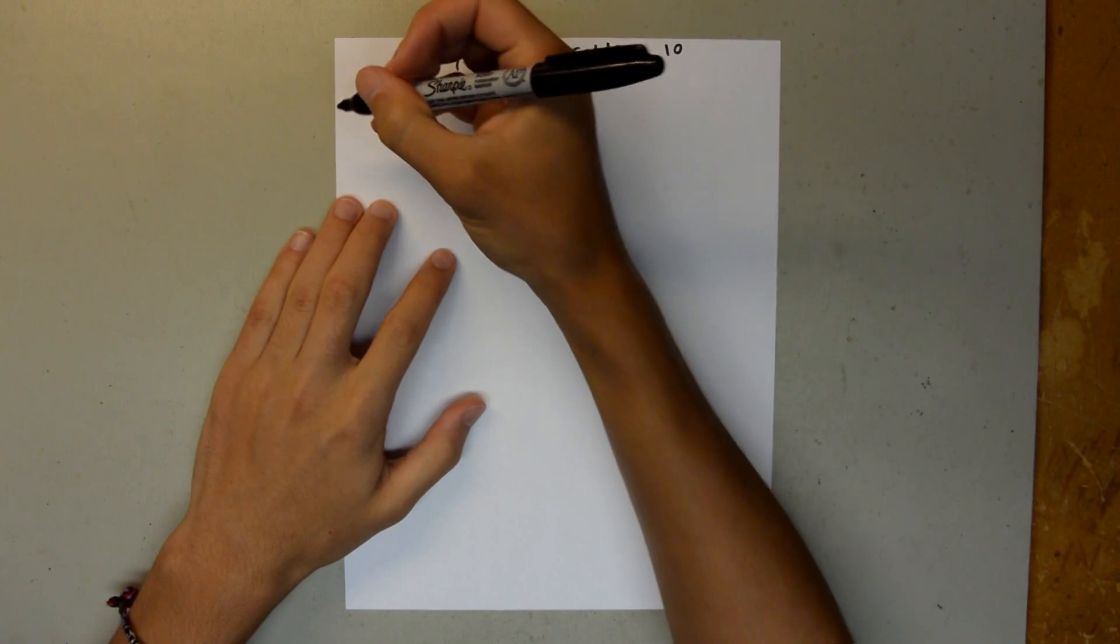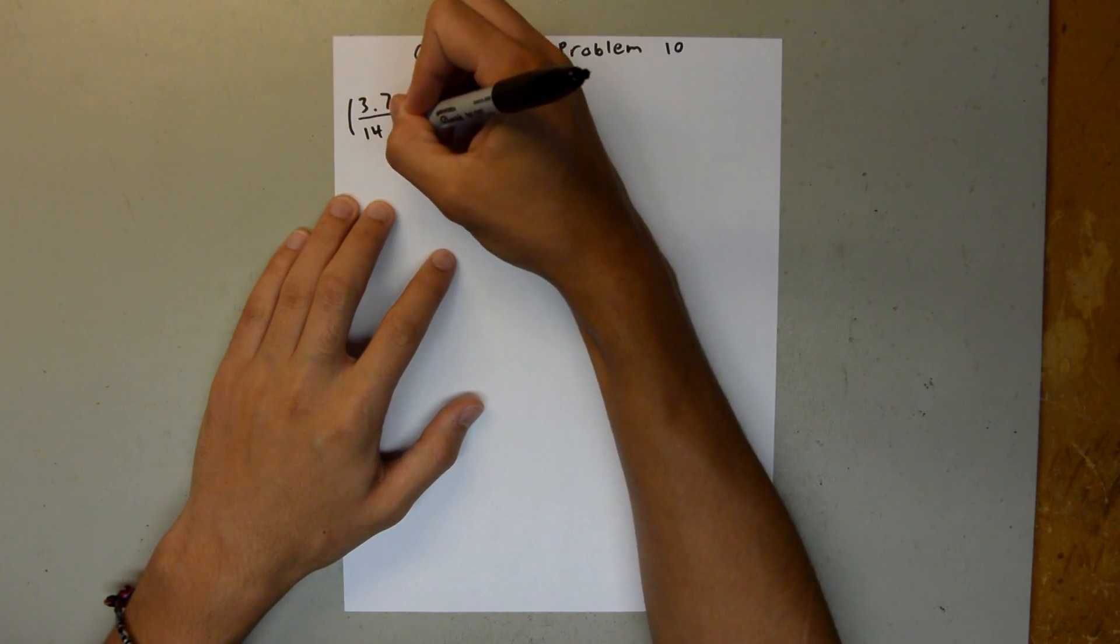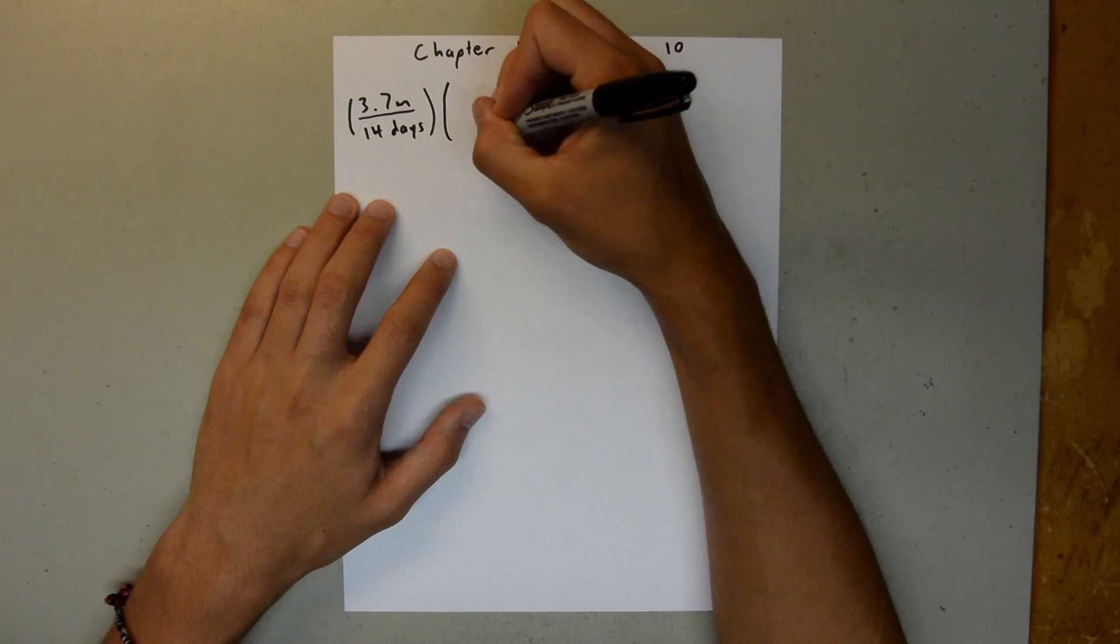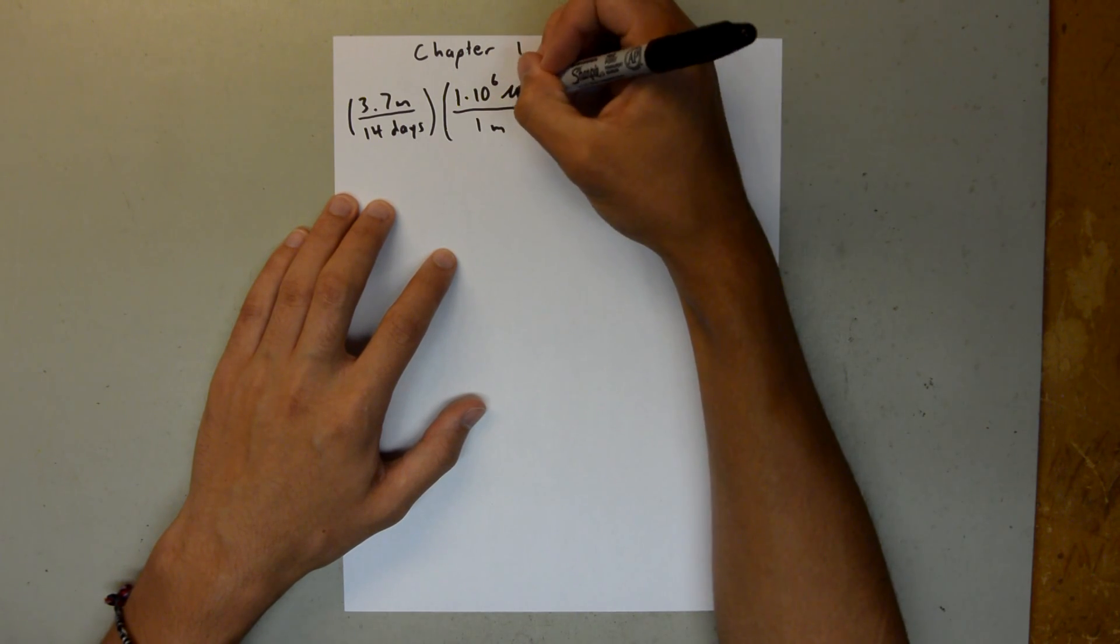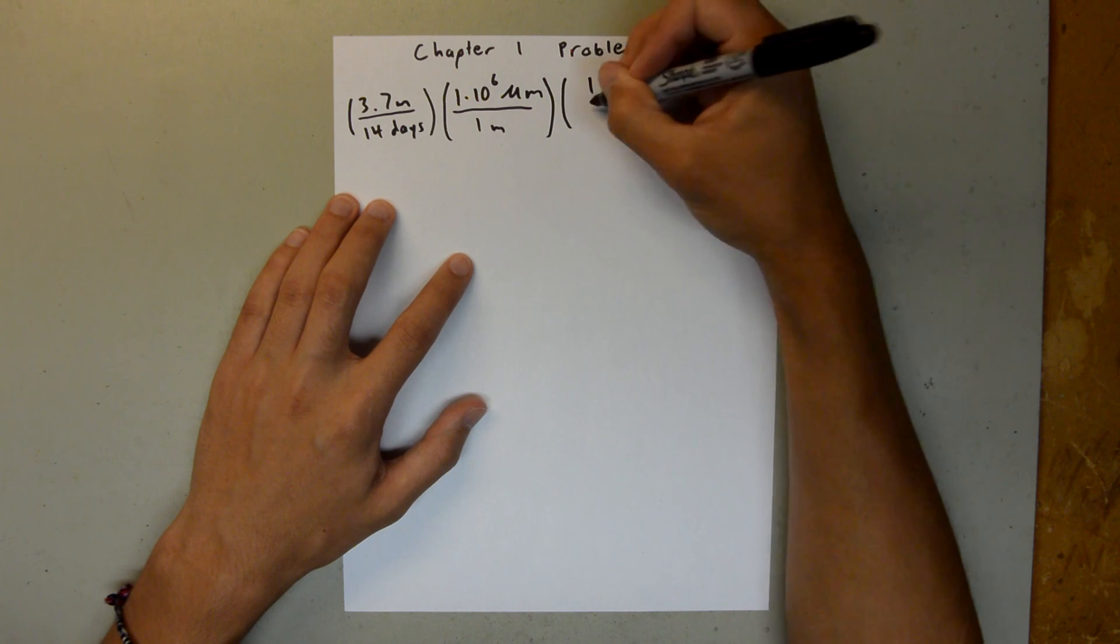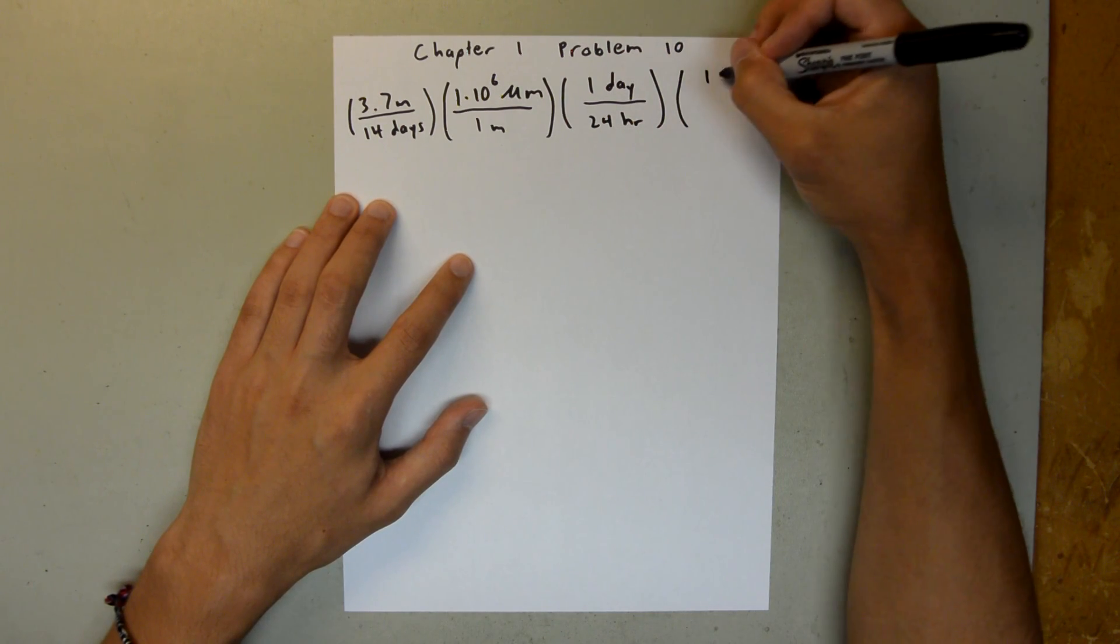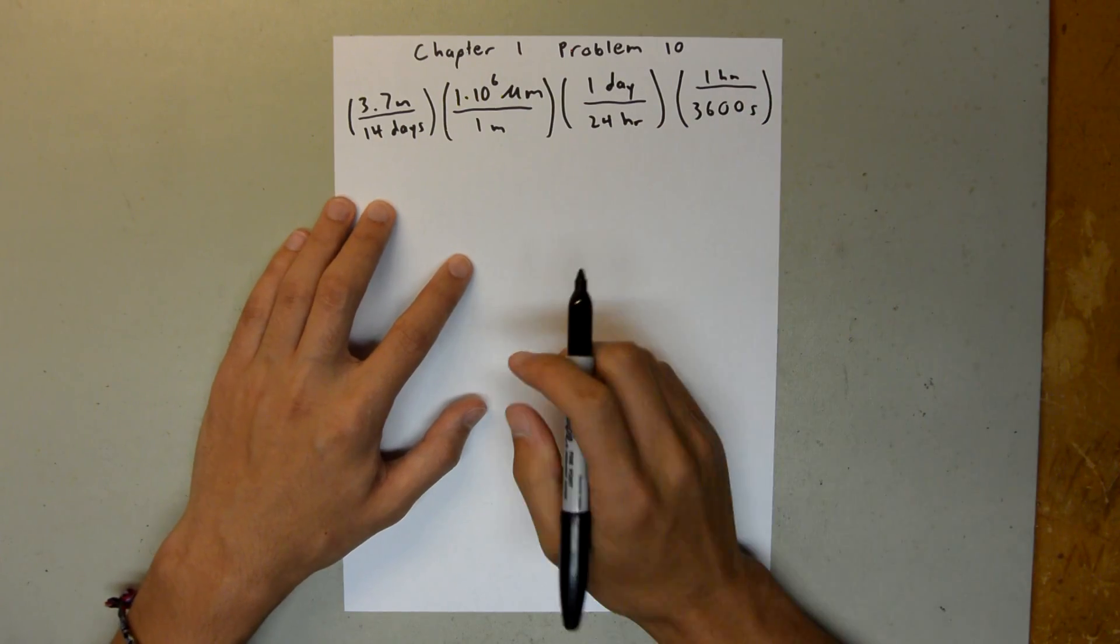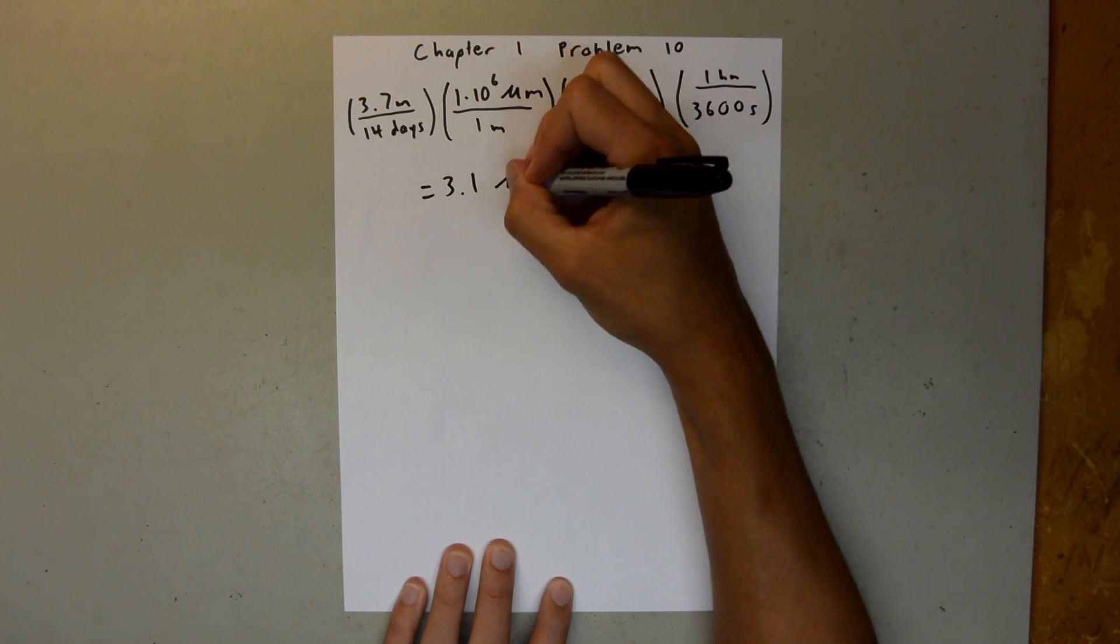So, what we can do is start with 3.7 meters per 14 days, and we know that 1 meter is 1 times 10 to the 6th micrometers. This is a Greek letter mu, that's the symbol for micro, and we know that 1 day is 24 hours, and we know that 1 hour is 3,600 seconds. So, when you multiply all that together, you should get 3.1 micrometers per second.